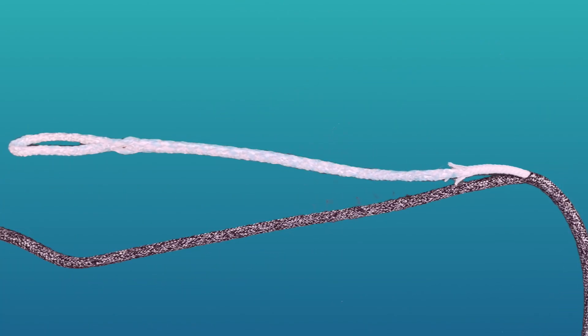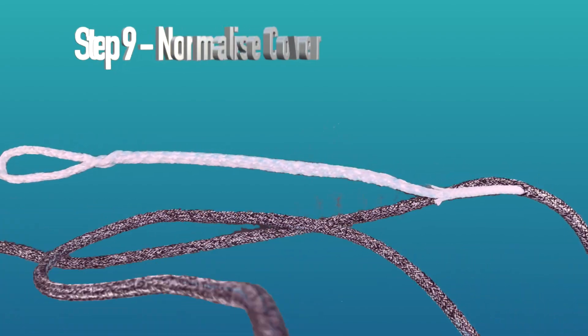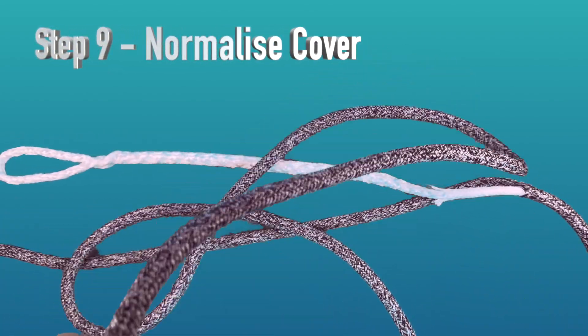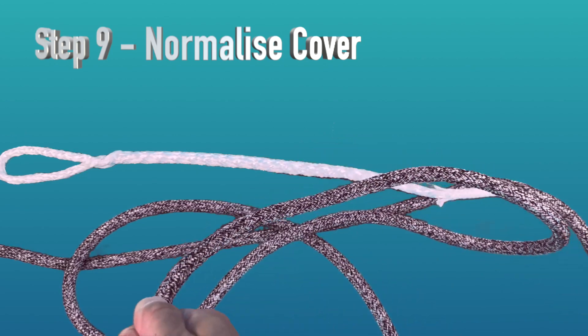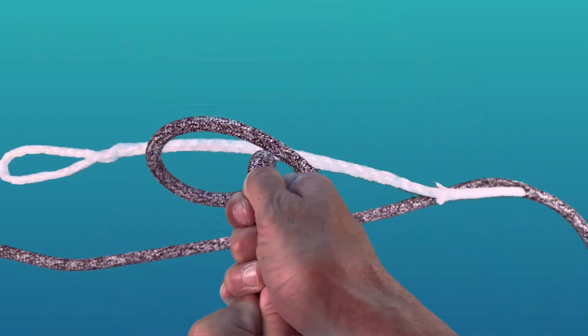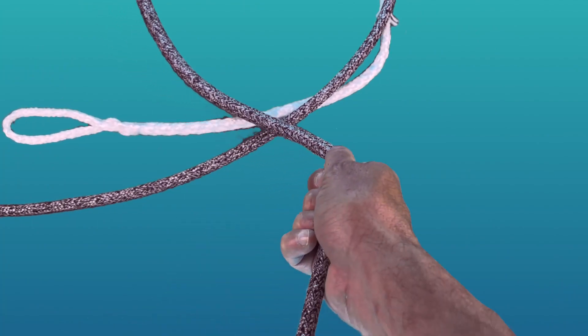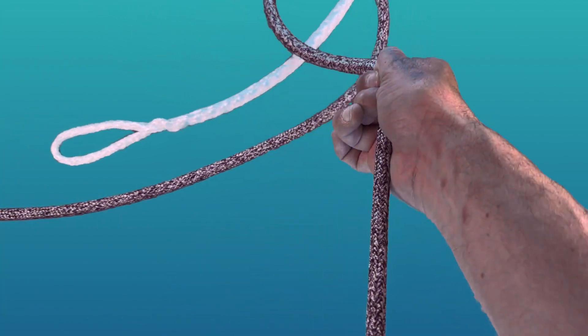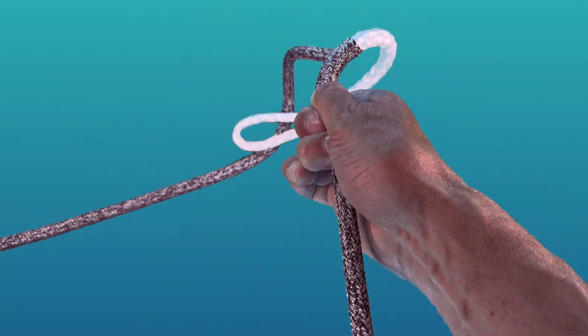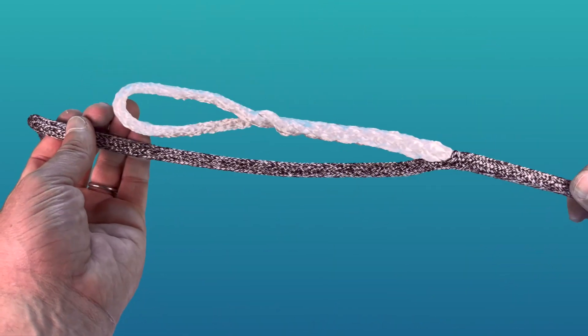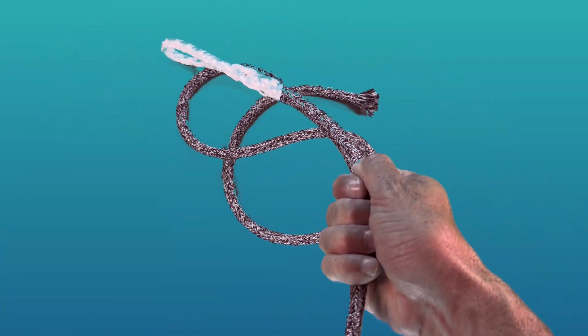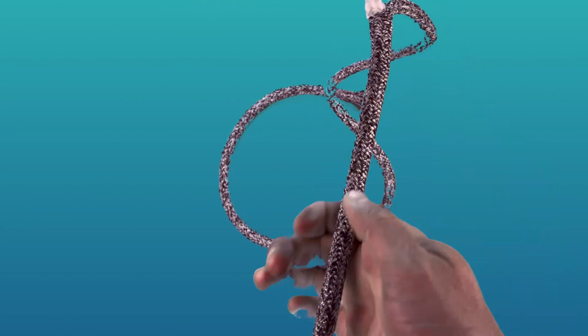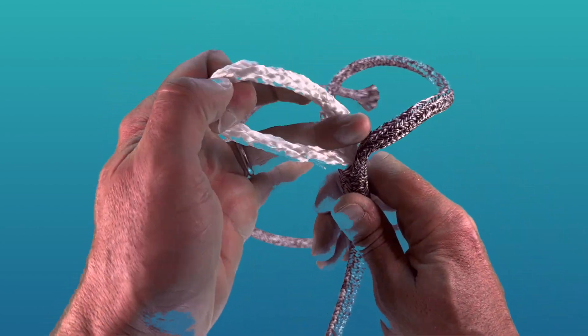For step number nine, it's just a simple matter of normalizing the cover back over the core that you've now put your locking splice into. This is relatively easy as you'd pulled out some core in an earlier step. Go several meters down the outer core and then just slide it up until the eye splice is finished at the exit point that you created in step number two.